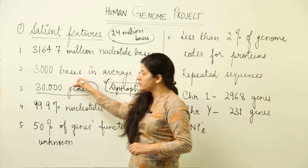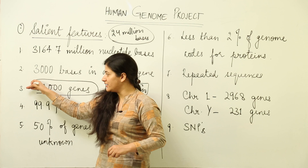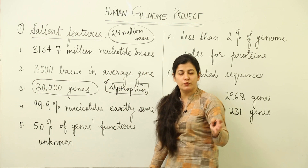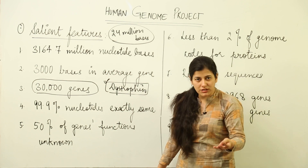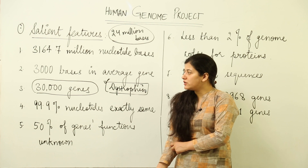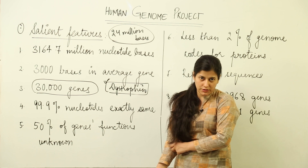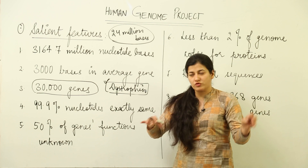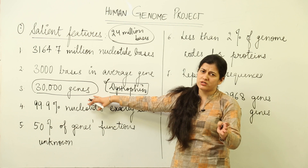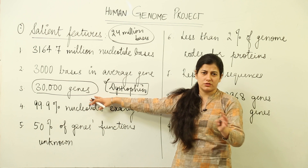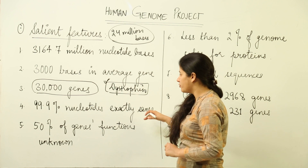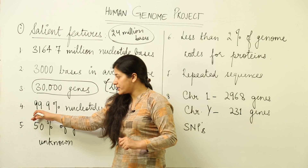How many genes are there in the human genome? Earlier it was estimated there were as many as 80,000 to 140,000 genes. That was not the true case — when the human genome was actually decoded, it was found that there are approximately 30,000 genes, which was totally different from earlier approximations.